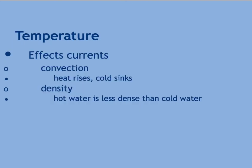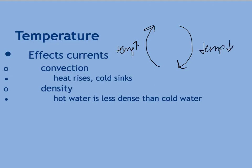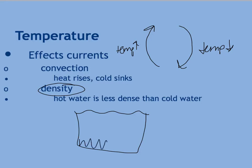Currents are also driven by temperature, as you learned in elementary school — heat rises, and cold temperature water or air sinks. So as the temperature goes up, so does the mass, whether it be air or water. And as the temperature goes down, so does the mass. This affects air currents and also water currents. And then you have density — the more dense something is, the more it sinks. So in a water column, generally the most dense material is going to be on the bottom and the least dense material will be at the top.